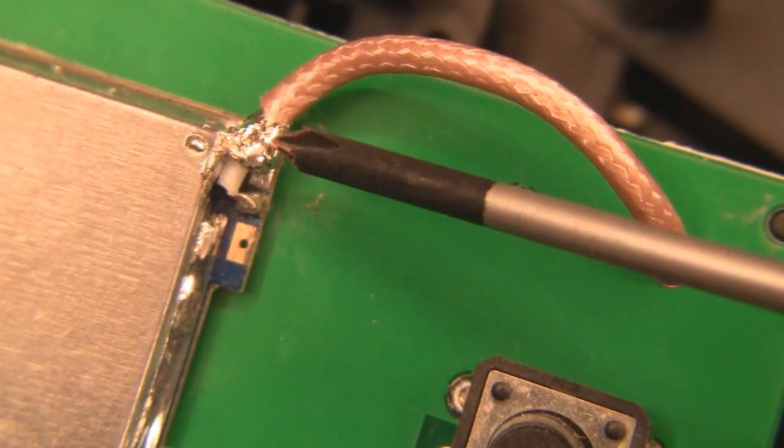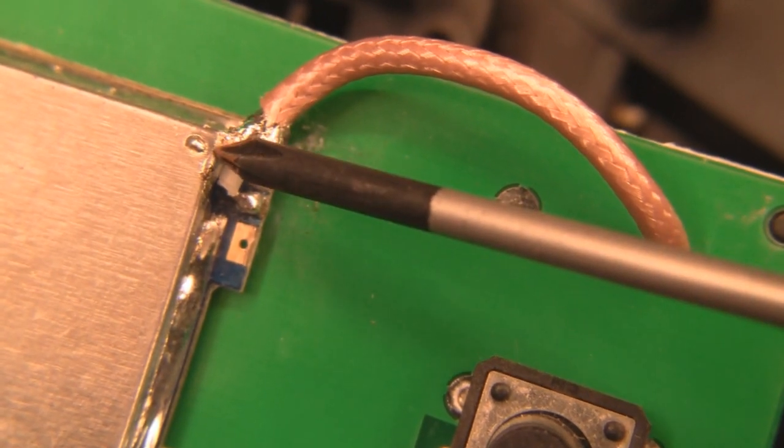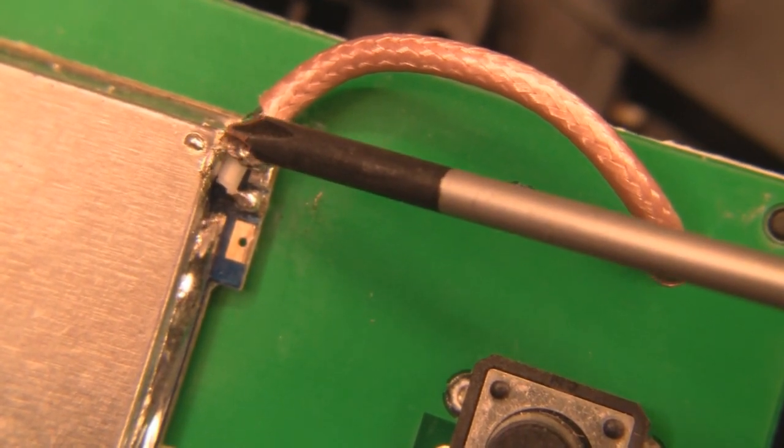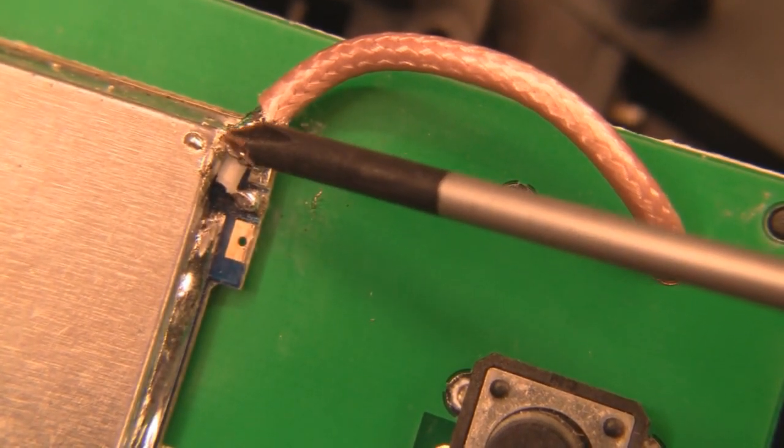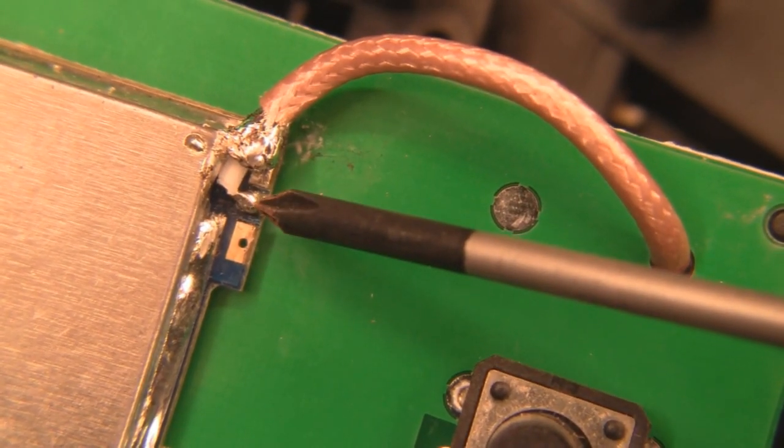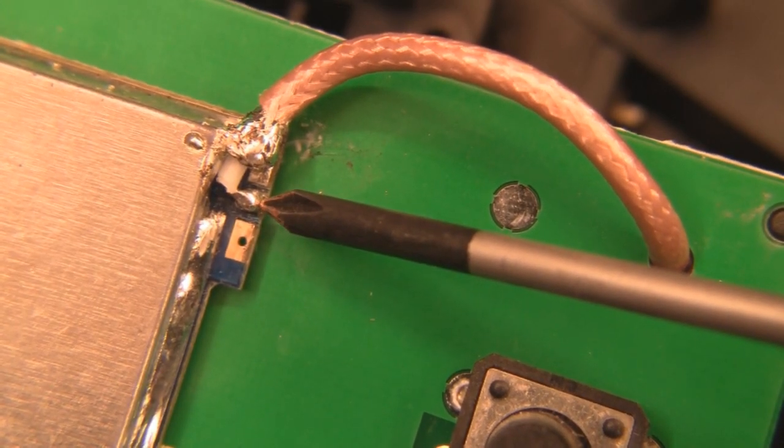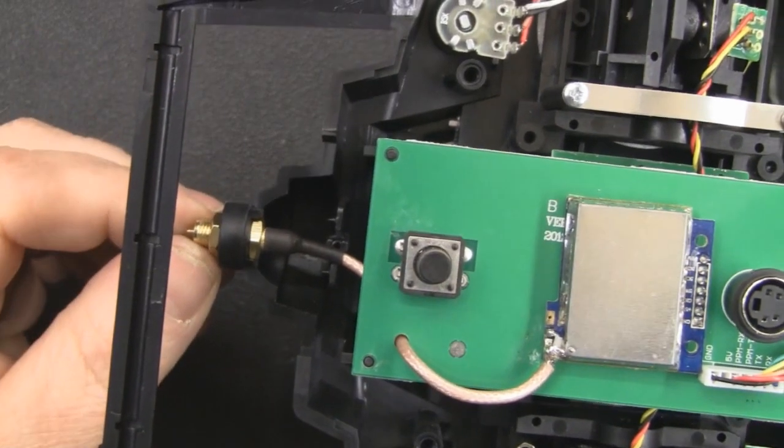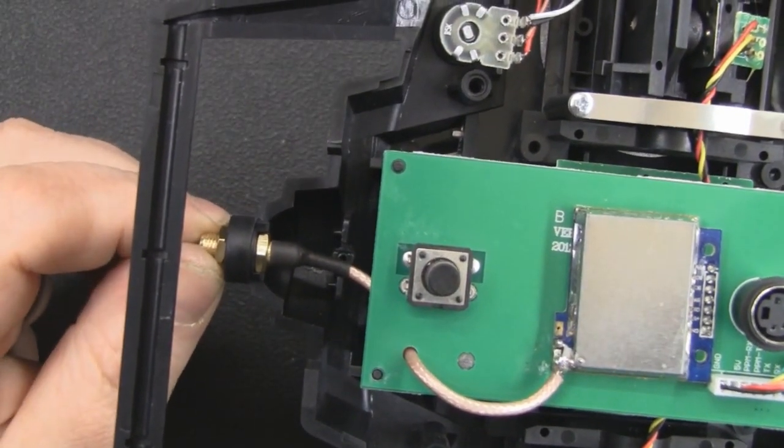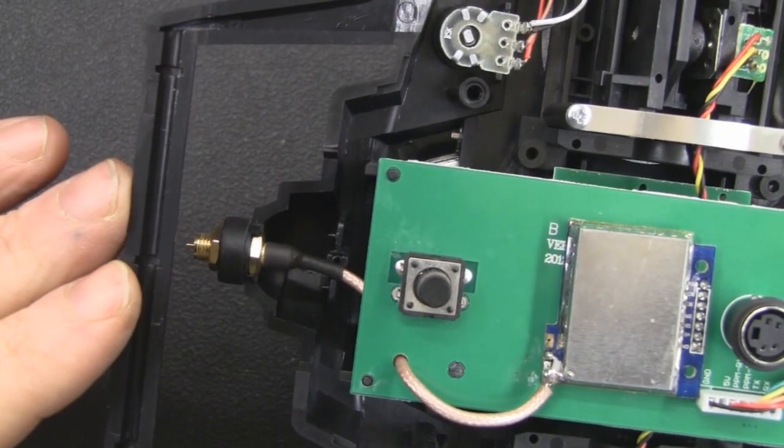Hopefully you can see now that the outer braid is actually soldered down onto the pad and up against this shield in here just to give it some strength. Once that was soldered in place I maneuvered the center pin into place and then soldered it down to its solder point here. It has been quite a straightforward mod, so I'm just going to tighten this nut up here now and then put the cover back on and then we're about done.